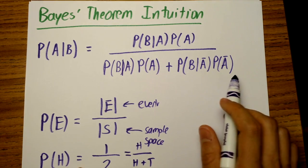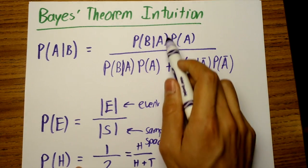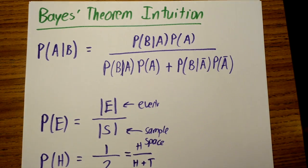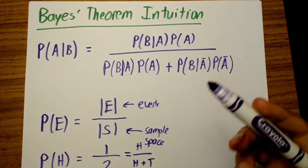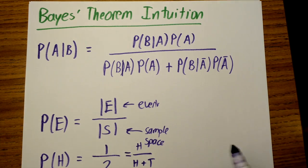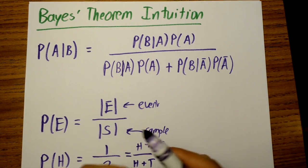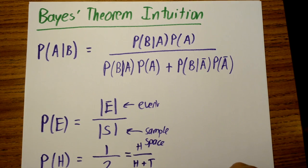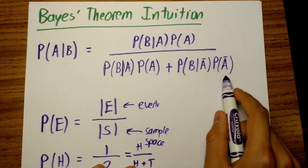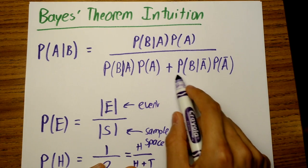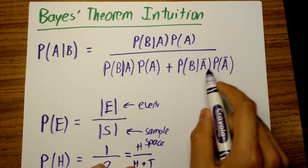This other part asks: what else could happen? A might not happen. So we look at A bar, which describes anything other than A, and multiply that by the probability of B happening given that A doesn't happen.